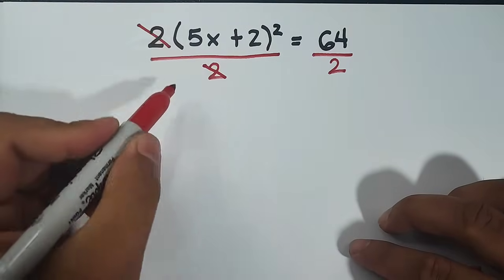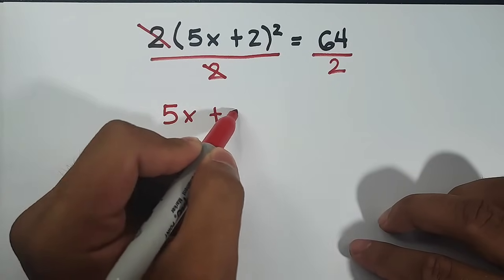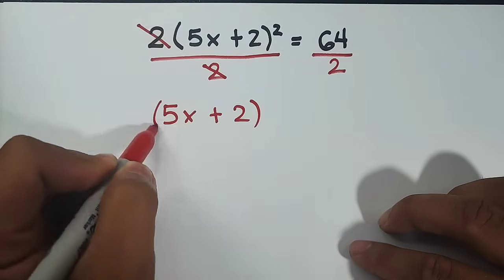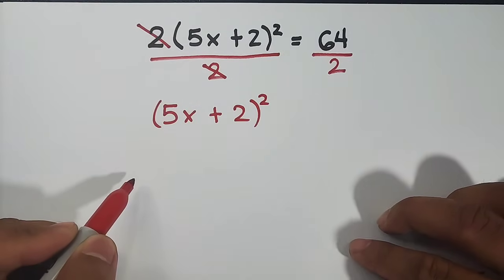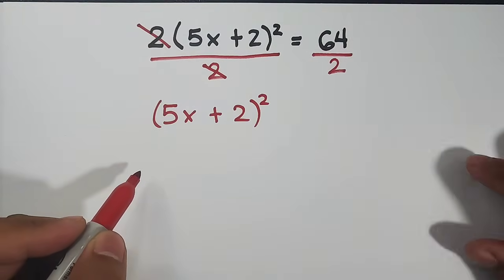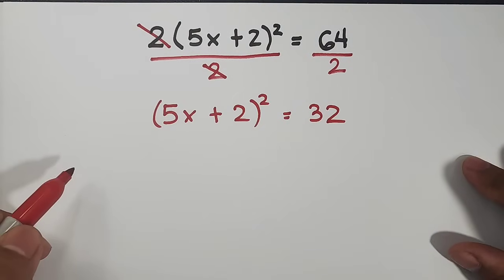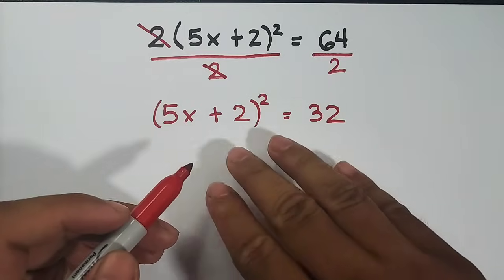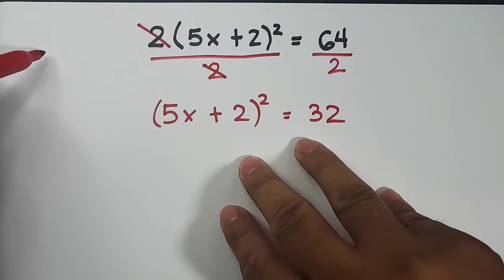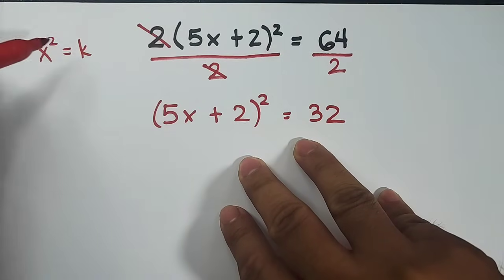What we have here right now is 5x plus 2 raised to the second power. And here on the right side of the equation, we have 64 divided by 2 that is equal to 32. So after this, as you can see, there is a pattern and we already have x squared is equal to k.